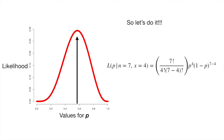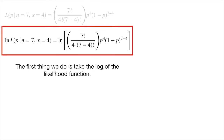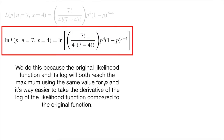So let's do it. Here's the original likelihood function with n equals 7 and x equals 4. The first thing we do is take the log of the likelihood function. We do this because the original likelihood function and its log will both reach the maximum using the same value for p, and it's way easier to take the derivative of the log of the likelihood function compared to the original function.